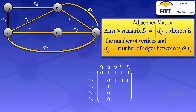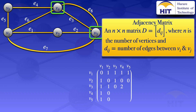For v3: between v3 and v3 there is no loop, so we put zero. Between v3 and v4, there are two edges, e3 and e8, so the number of edges is two. We put a two at v3,v4 and also at v4,v3.